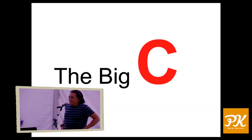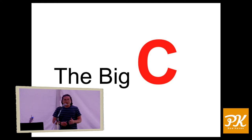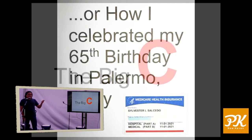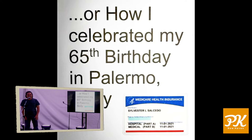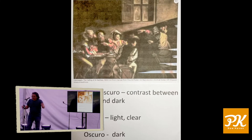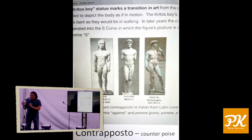The big C is my topic for this evening. So the big C — or how I celebrated my 65th birthday in Palermo, Sicily. The first C is chiaroscuro — 'chiaro' meaning light and 'oscuro' meaning dark. Here Caravaggio, a great Italian artist, is a good illustration of chiaroscuro. Another C before we get to the big one is contrapposto — you put your body weight on one leg and get that sexy supermodel S-curve, illustrated here by the great maestro Michelangelo.